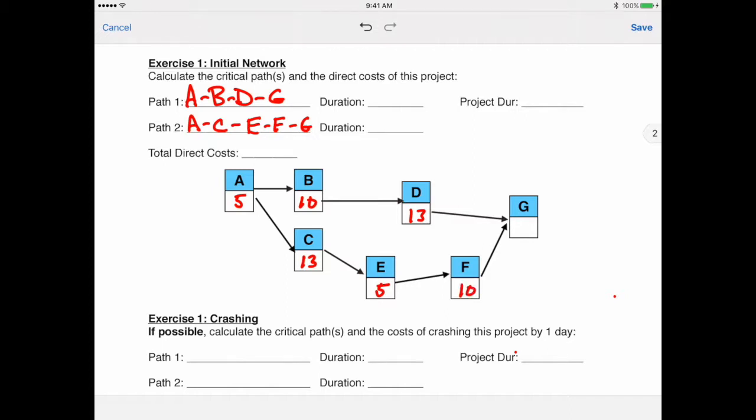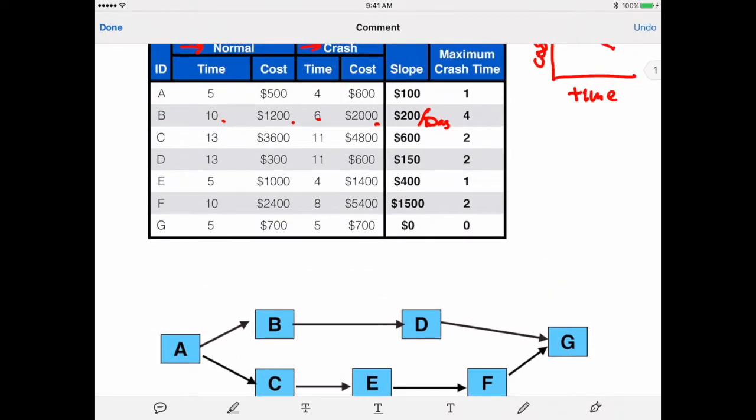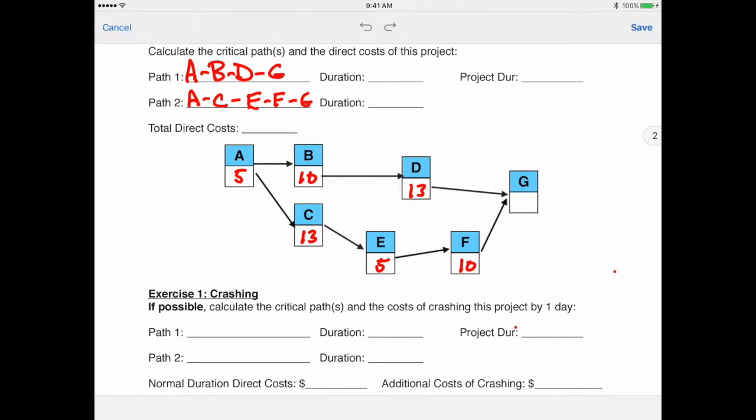Now the way I was always taught it is if you did have a task that could not be crashed anymore, you would actually put an X behind it. So if you look here on G, there's actually no amount of money that we can add to this project to get G done any quicker. So if we come down here, what I'm going to do is I'm going to actually put 5X in that spot. Now if I add up this path here, I will find that that is right at 33 days. And if I add up this path here, I will find that that is at 38 days. So our project duration is 38.